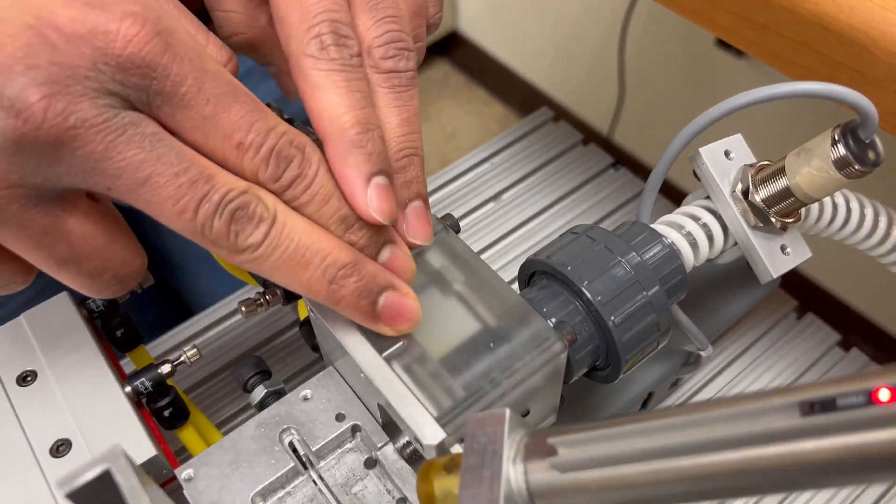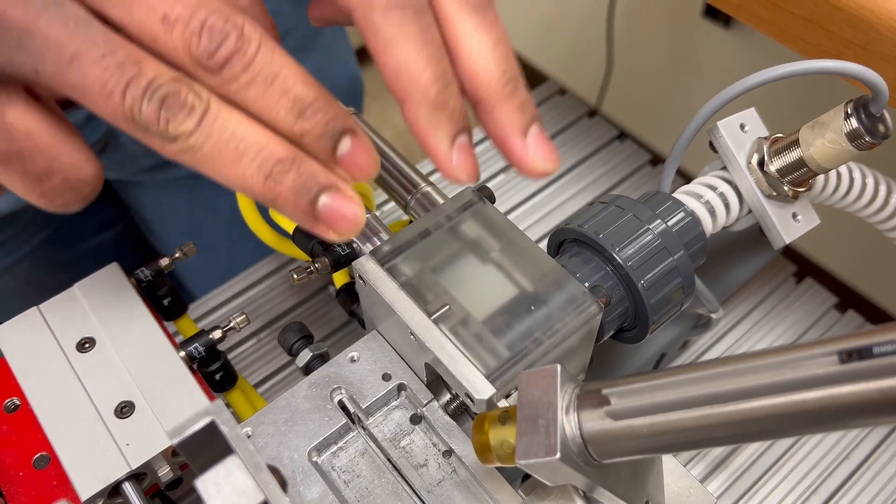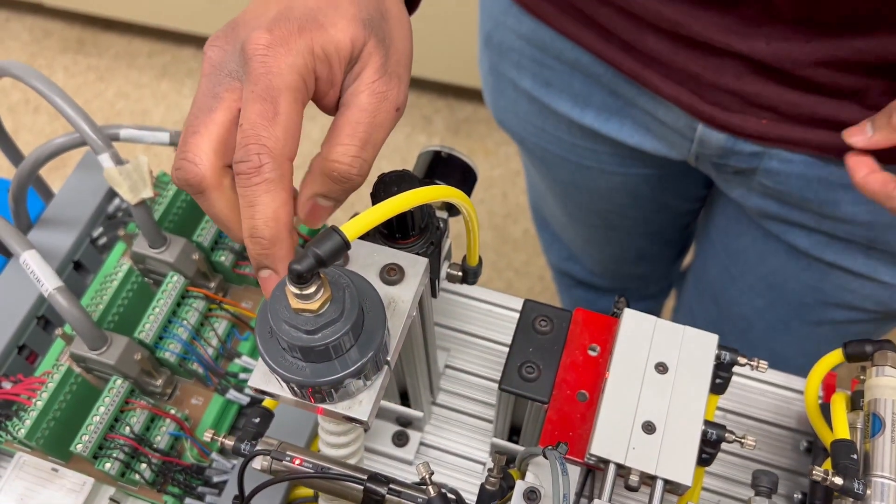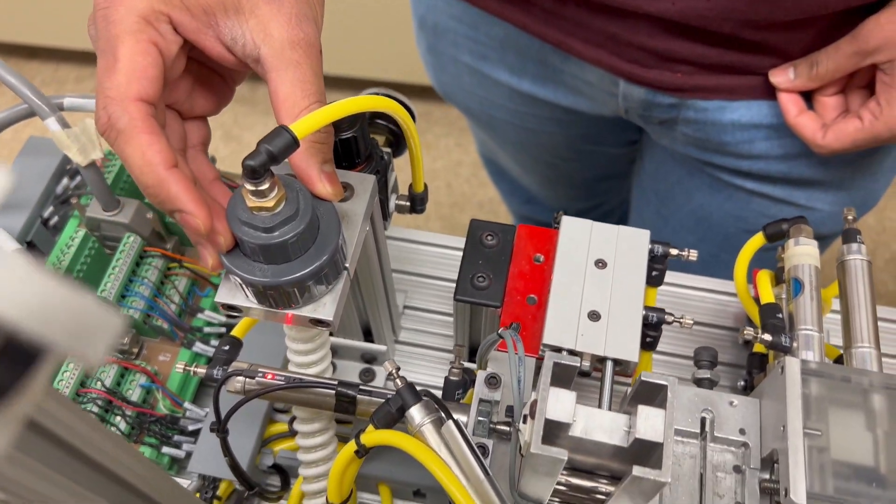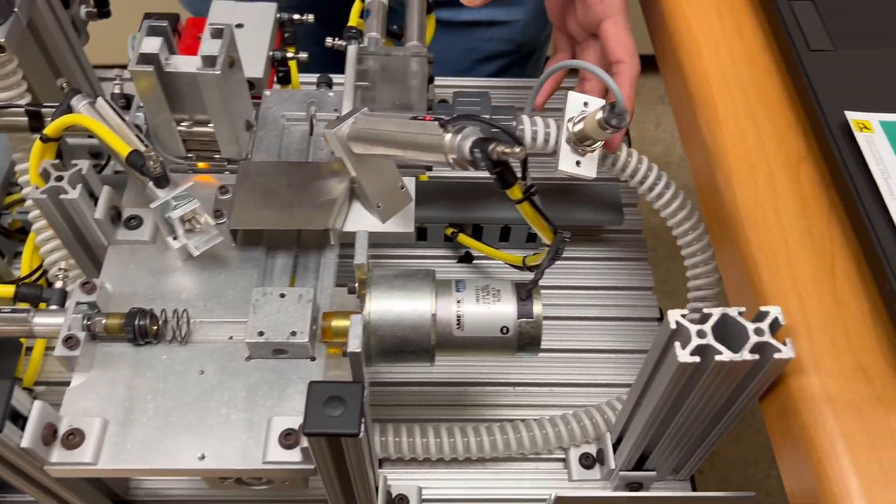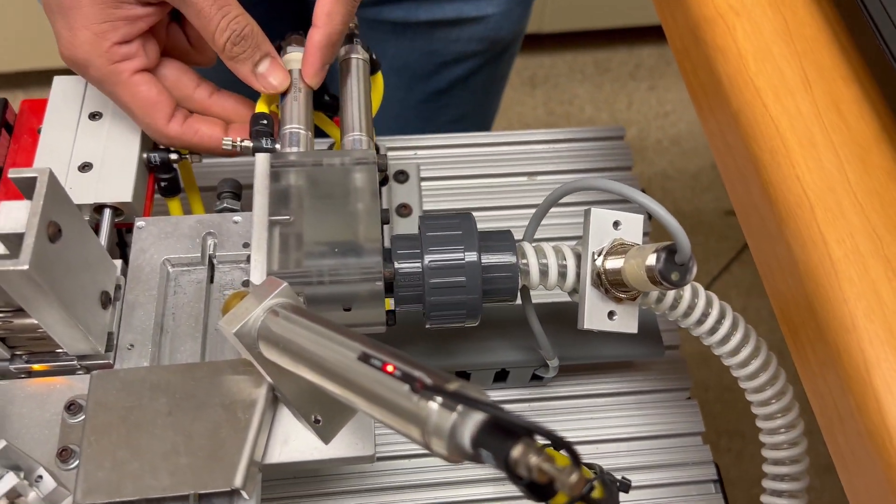Here we have the screw insertion station and the screws are actually placed inside the vinyl tube over here. And the pneumatic air is used to push the screws through the vinyl tube to the outlet where we have a cylinder setup.